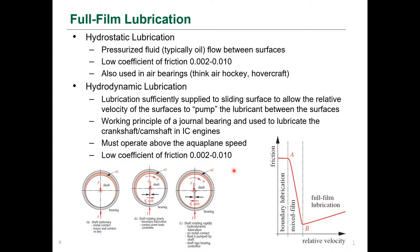Hydrostatic lubrication is a full film mechanism with pressurized fluid pumped between two surfaces. It has a very low coefficient of friction — typically 0.002 to 0.010. It is used for air bearings. Think of air hockey or hovercraft; air bearings are also used in precision machines like CMMs, where the gantry axis moves front and back on the table on an air film.